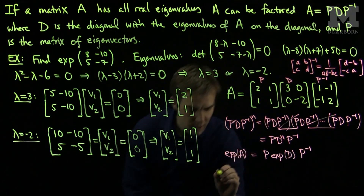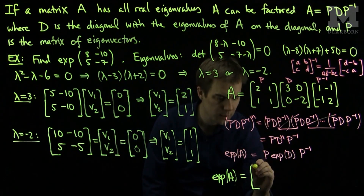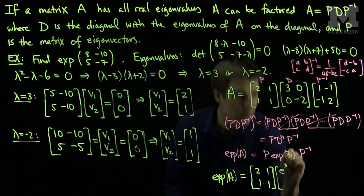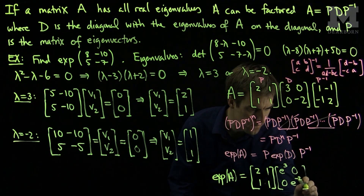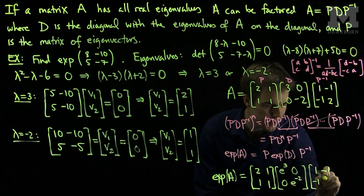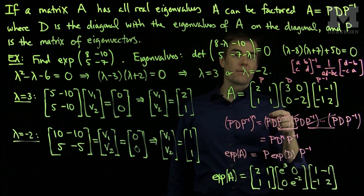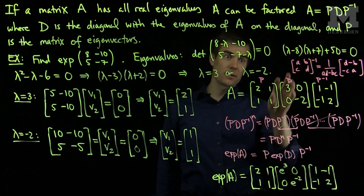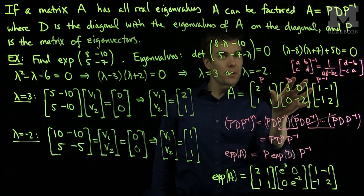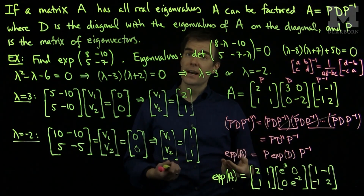From this, we can now write down our solution. The exponential of A is the matrix P of eigenvectors [2, 1; 1, 1], times the exponential of the interior matrix [e³, 0; 0, e⁻²], times the inverse matrix P inverse [1, -1; -1, 2], and we have the exponential of our matrix. To summarize: when a matrix has real eigenvalues, write A = P D P inverse where P is the eigenvector matrix and D is the diagonal eigenvalue matrix. The exponential of A is then P times the exponential of D times P inverse, making it easy to compute. Thank you very much.